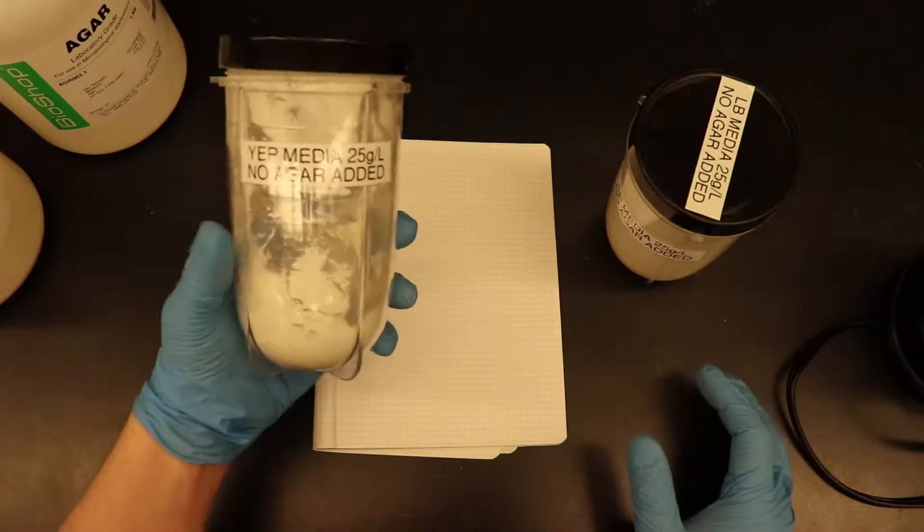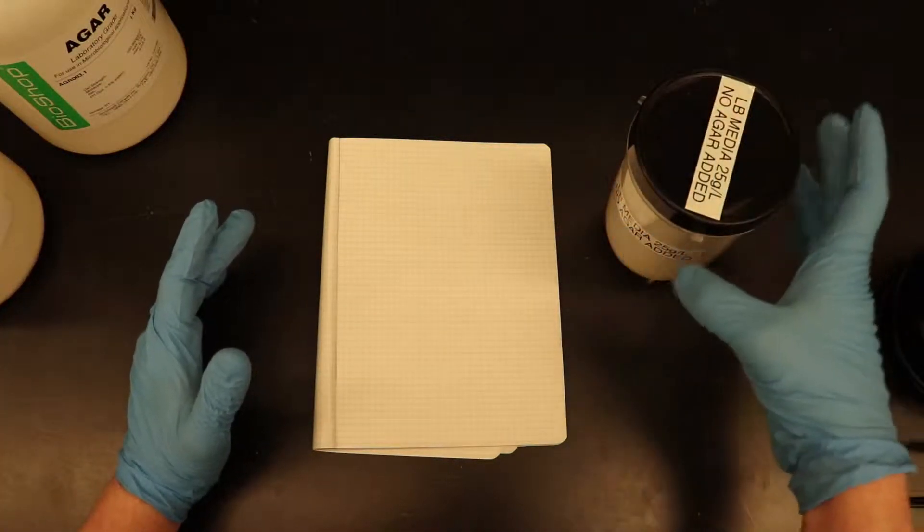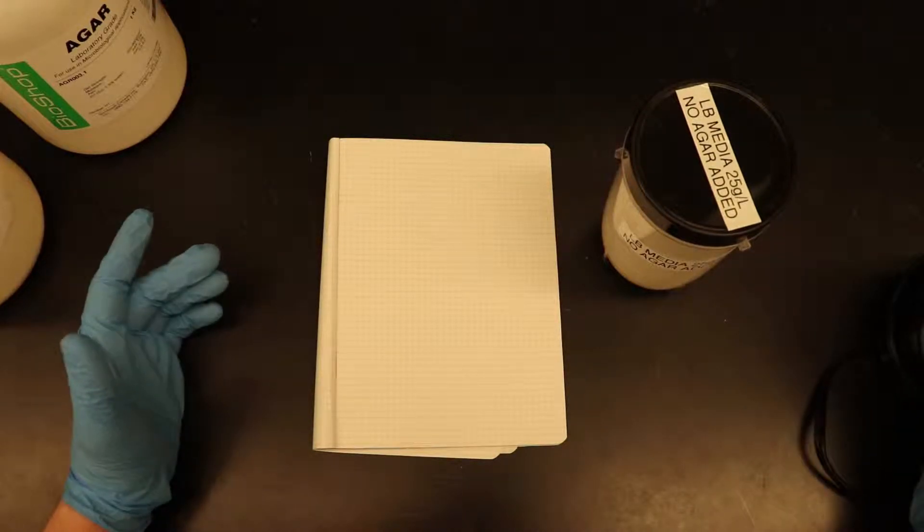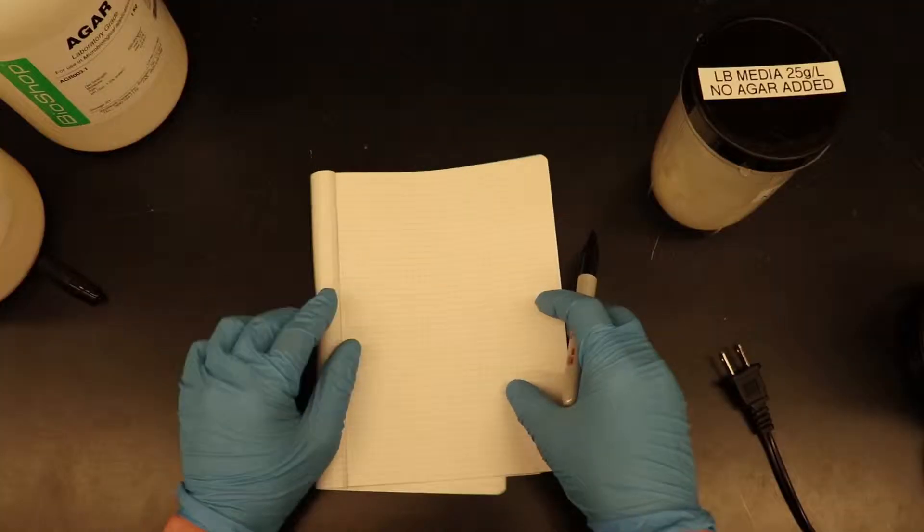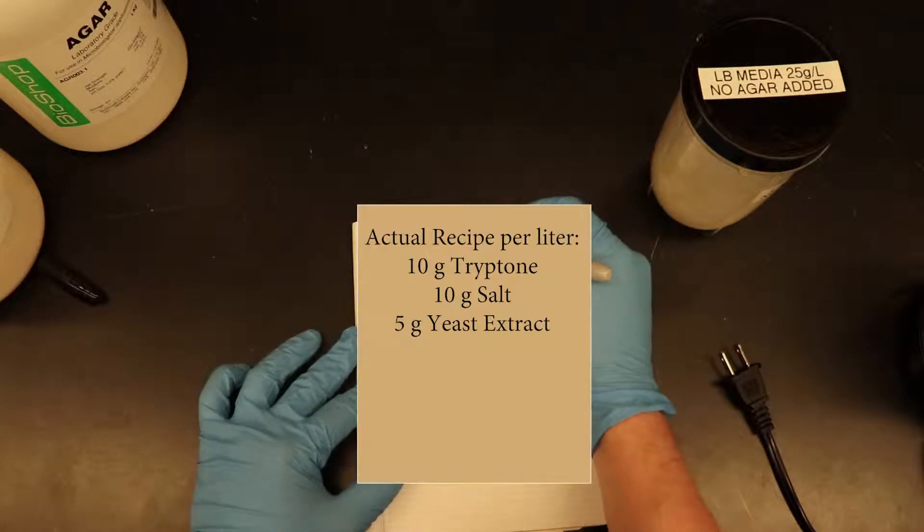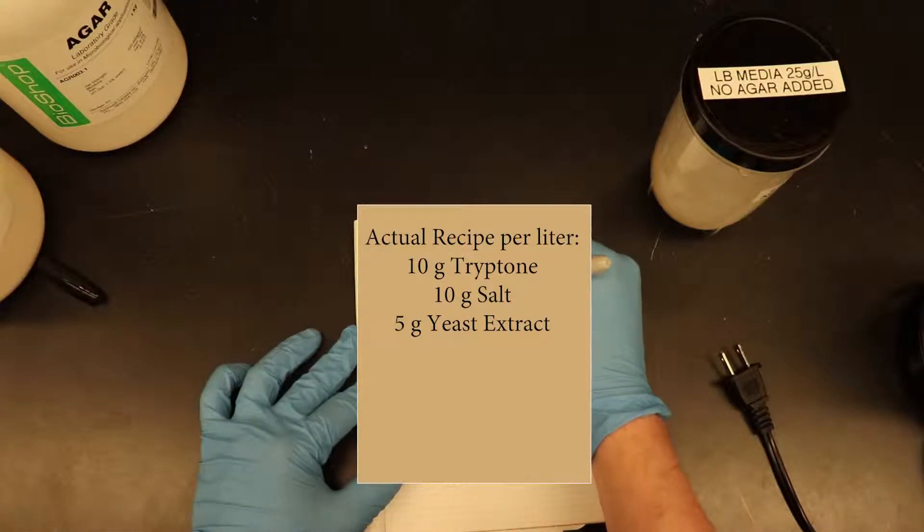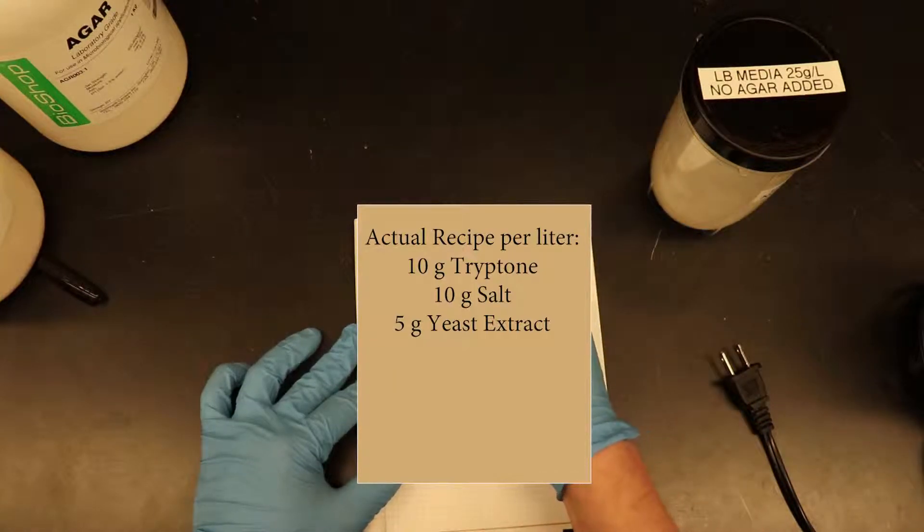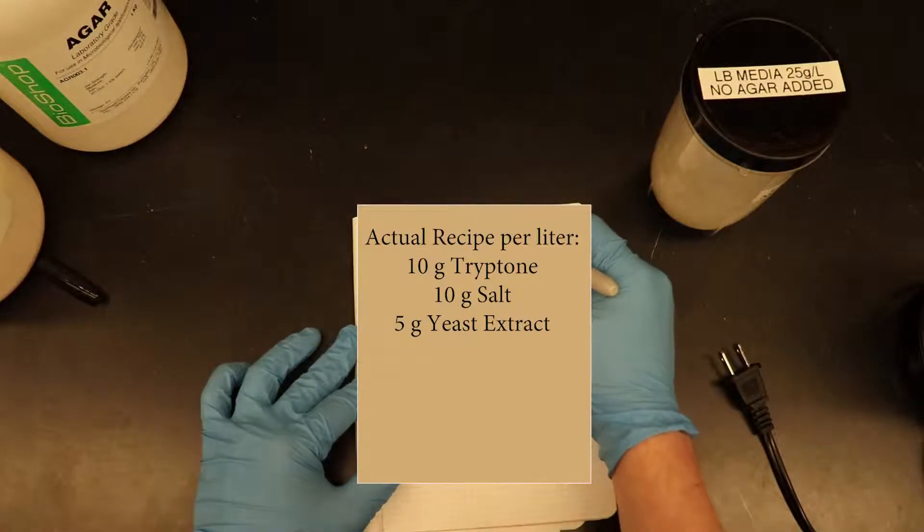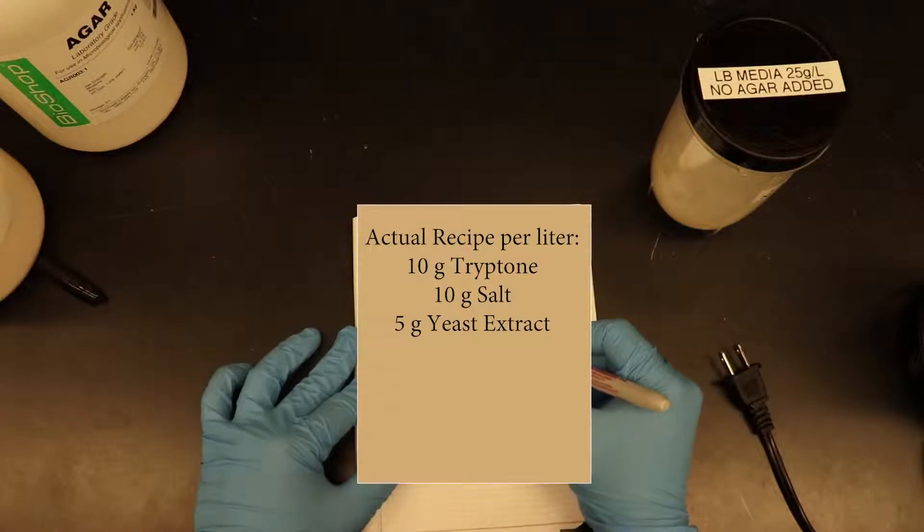And we use it for a couple of different kinds of media. We do YEP, we do LB, we do YPAD. So if you use a lot of different kinds of media and you're tired of weighing things out one by one, it's helpful to make a batch at a time with one of these beauties. So we'll be making 10 liters worth of LB media. So LB for one liter, we're going to need 10 grams of tryptone, 10 grams of yeast extract, and then 5 grams of salt.